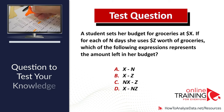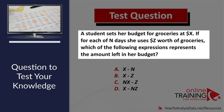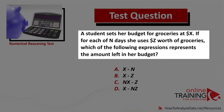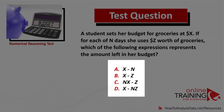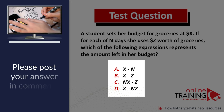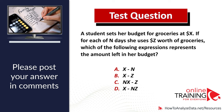Here is a question from a real test to help you test your knowledge. A student sets her budget for groceries at X dollars. If for each of N days she uses Z worth of groceries, which expression represents the amount left in the budget? Choices: A) X minus N; B) X minus Z; C) NX minus Z; D) X minus NZ. Please post your answer in the comment section.